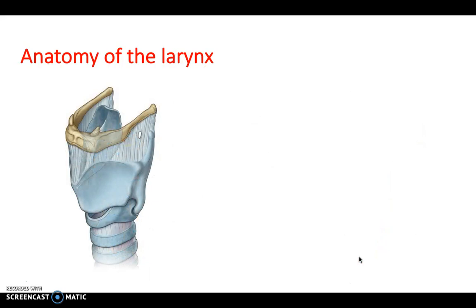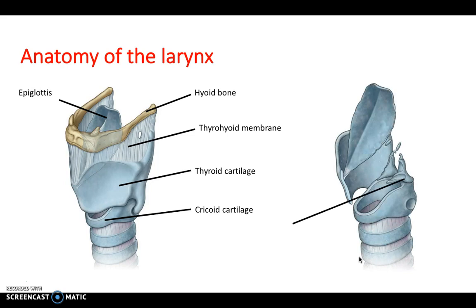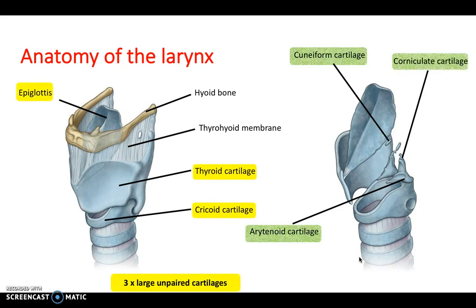Moving down is the larynx. It's important to know the cartilages: three large unpaired and three small paired. The three unpaired are the thyroid cartilage, the cricoid cartilage, and the epiglottis. Between the hyoid bone and thyroid cartilage is the thyrohyoid membrane. The three small paired cartilages are the arytenoid, with the corniculate sitting on top, and the cuneiform above that.